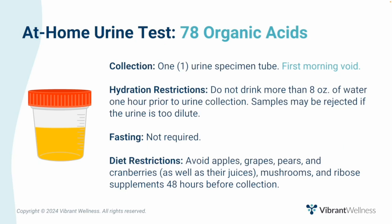The Vibrant Organic Acids Test is an easy at-home urine test. Patients need only collect their first morning urine. To avoid dilute samples, avoid drinking more than 8 ounces of water one hour prior to urine collection. And to avoid falsely elevated markers, patients should also avoid apples, grapes, pears, and cranberries, mushrooms, and ribo supplements 48 hours before collection.